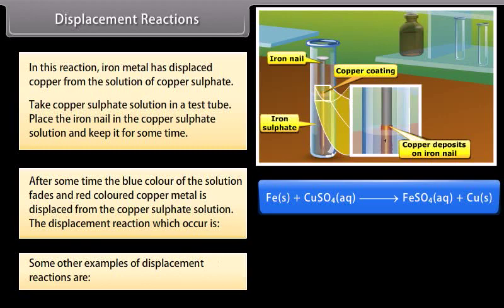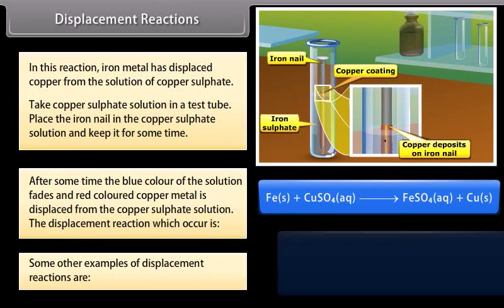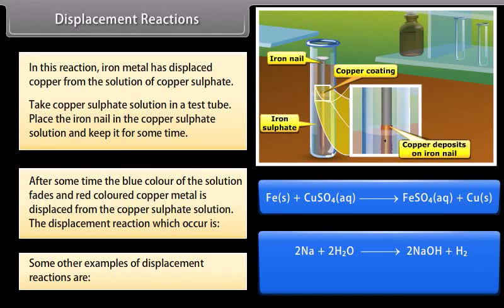Some other examples of displacement reactions are 2Na plus 2H2O gives 2NaOH plus H2. 2Al plus Fe2O3 gives Al2O3 plus 2Fe.